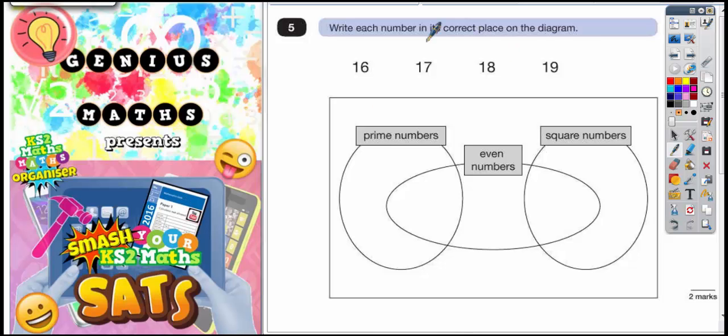Question 5. Write each number in its correct place on the diagram. Okay, so we're talking prime numbers, even numbers and square numbers. So we've got to see what we recognize here.